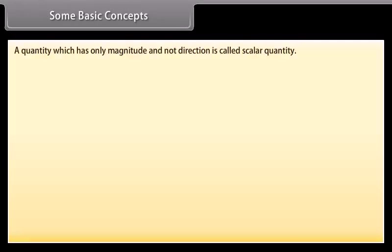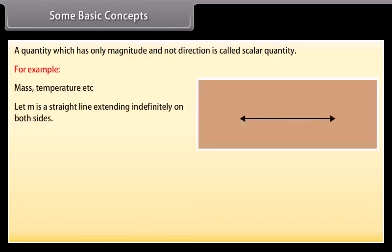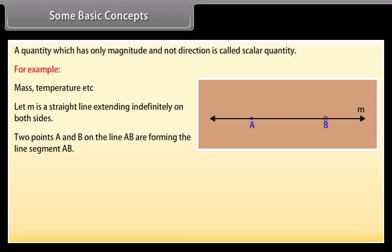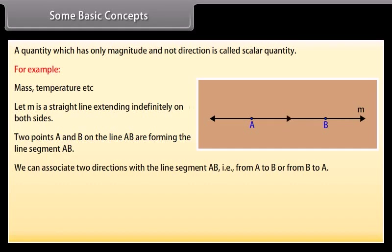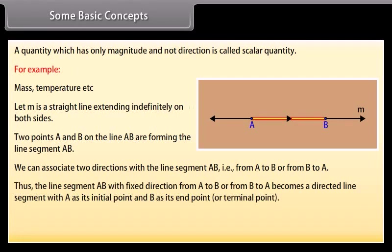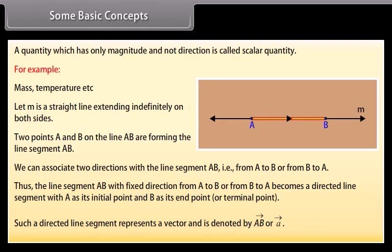A quantity which has only magnitude and not direction is called scalar quantity. For example, mass, temperature, etc. Let M be a straight line extending indefinitely on both sides. Two points A and B on the line are forming the line segment AB. We can associate two directions with the line segment AB — from A to B or from B to A. Thus, the line segment AB with fixed direction from A to B or from B to A becomes a directed line segment, with A as its initial point and B as its end point or terminal point.